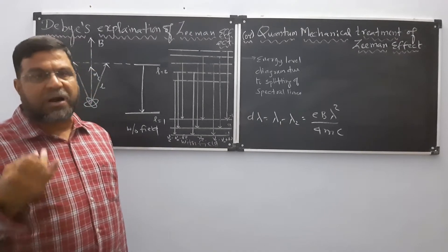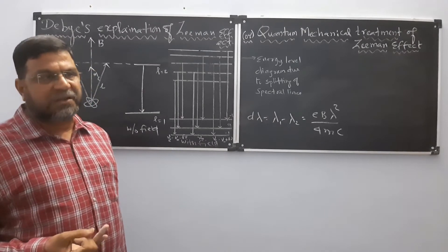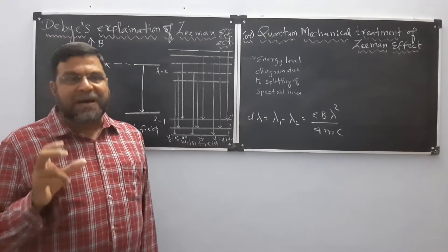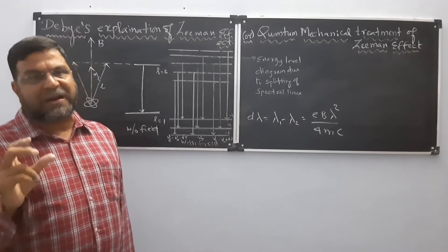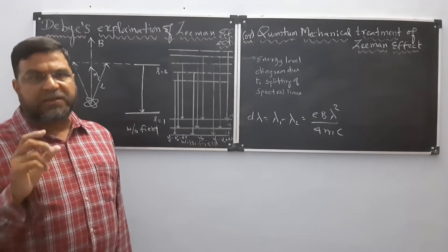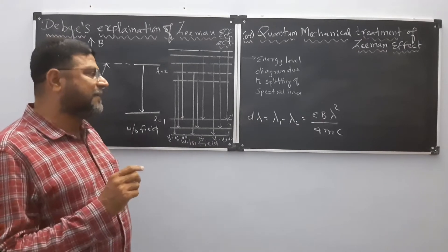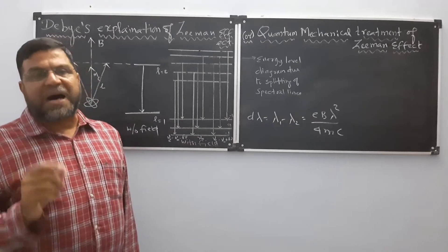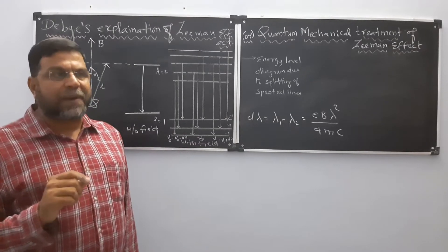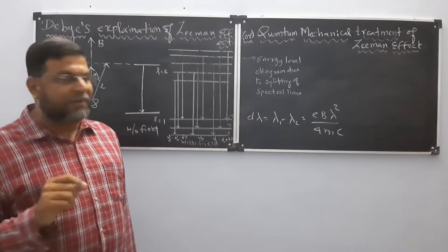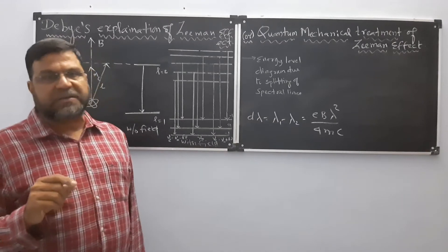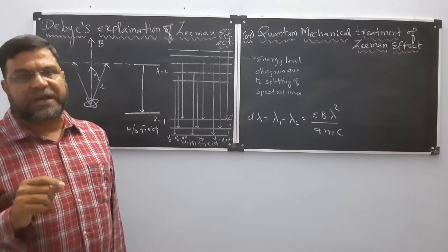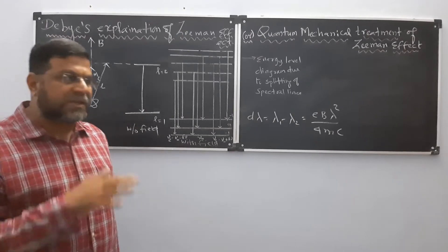In that formula, e is the charge of the electron, B is the strength of the external magnetic field, lambda is the wavelength of the parent spectral line, m is the mass of the electron (9.1 × 10⁻³¹ kg), and c is the velocity of light, which is 3 × 10⁸ m/s.